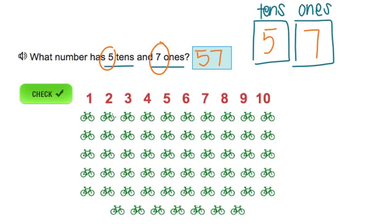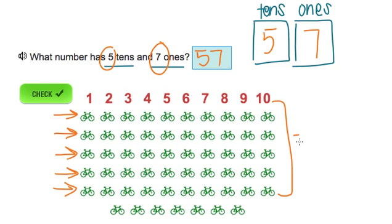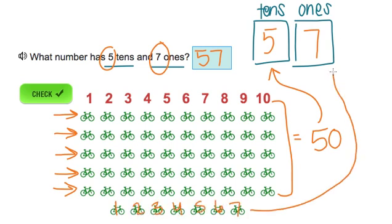We can also look at some bicycles. I've already counted 1 through 10, so each group is a group of 10. How many do we need? We need 5 tens — there's 10, another 10, another 10, another 10, another 10 — that's a total of 50 bikes, which is equal to 5 tens. Then we have 7 individual bikes: 1, 2, 3, 4, 5, 6, 7 — those are our ones. So we have five tens and seven ones, and the number is 57.